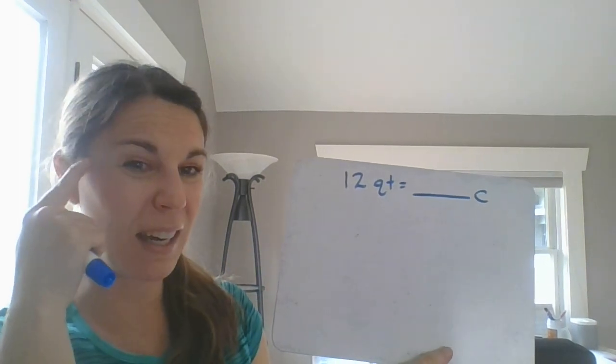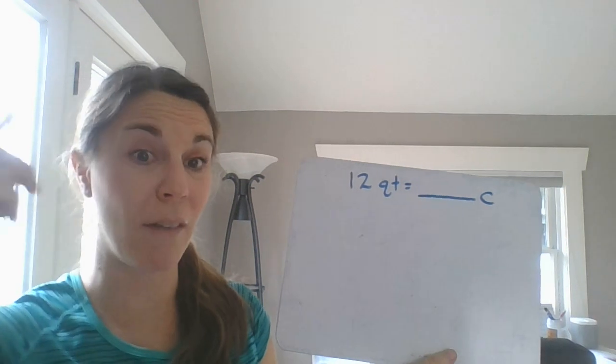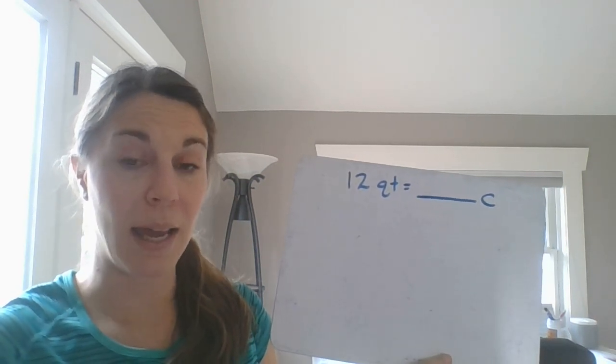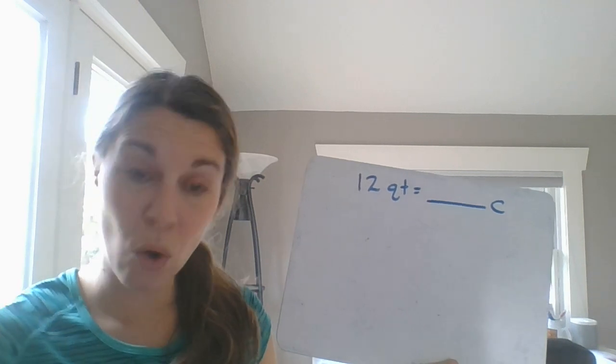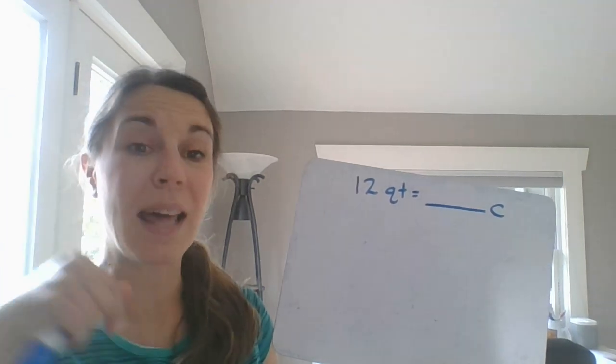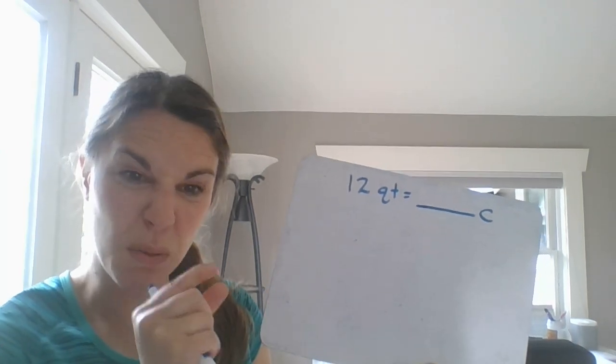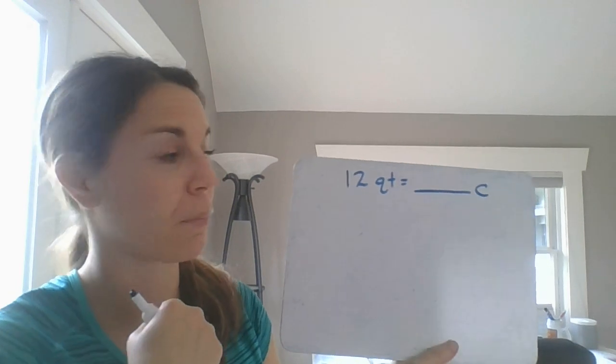So remember when we're thinking of kind of largest to smallest, we have our gallon, think of like gallon of milk. Then we would have our quarts, which is our Qs, then our pints, which is PT. And the smallest one, remember, are our cups.